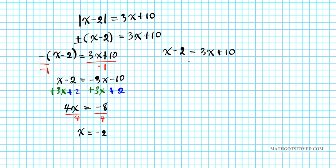For the positive case: x − 2 = 3x + 10. Adding 2 to both sides and subtracting 3x gives −2x = 12, so x = −6.